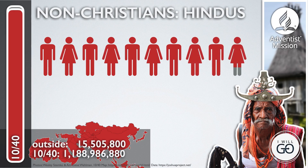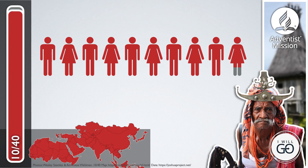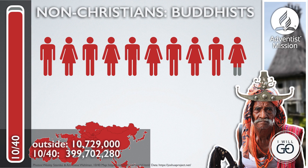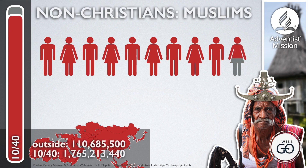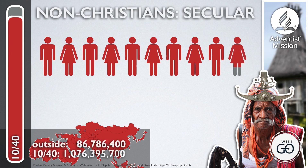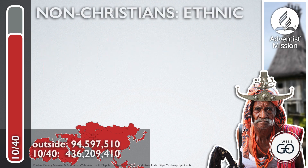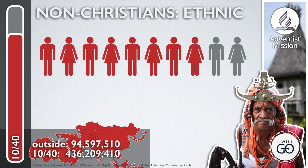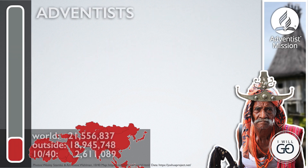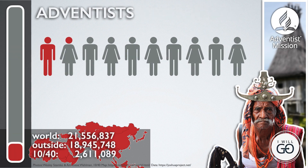The 1040 Window is also home to the majority of the non-Christian faith groups and ideologies. Thinking of the world's population as a group of 10: nearly all 10 Hindus would live in the 1040 Window; it's over nine and a half of 10 for Buddhists; and over nine and a half of the world's Muslims. Surprisingly, it's also over nine and a half for the world's non-religious people. Eight out of ten of the world's ethnic or animist religions would also be here. Only a little more than one in ten of the world's Adventists call the 1040 Window home.